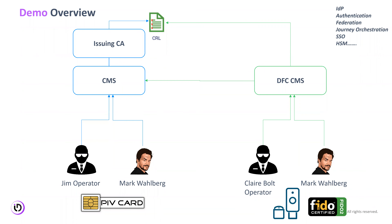There are a lot of other things behind the system I'm not going to cover because they're out of scope: there is an IDP back there, there's the authentication service, the federation, single sign-on, HSM, et cetera. I wanted to keep it simplified so everyone on the call understands the use case of the FIDO credential. You'll also notice this is very similar to the PIV derived credential — PIV Drive — which works the same way.